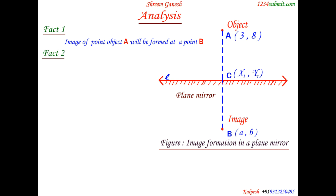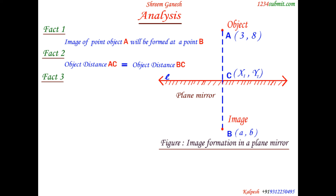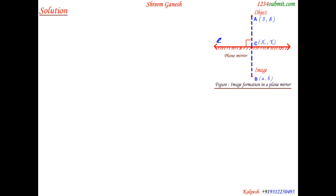Second fact: for an image formed in a plane mirror, the distance of the image from the mirror equals the distance of the object from the mirror, i.e., object distance AC equals image distance BC. Third fact: for a plane mirror, the line segment joining the object and image is perpendicular to the mirror, so line segment AB is perpendicular to line L.